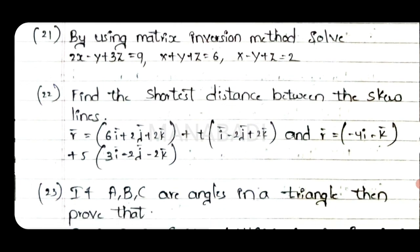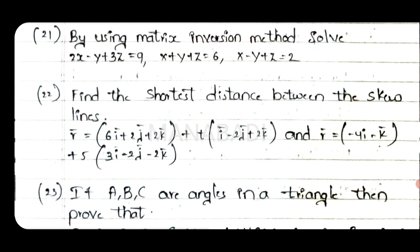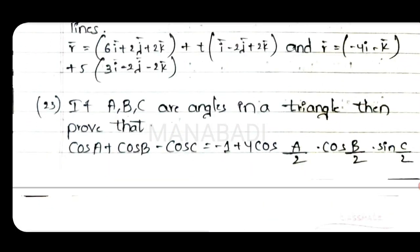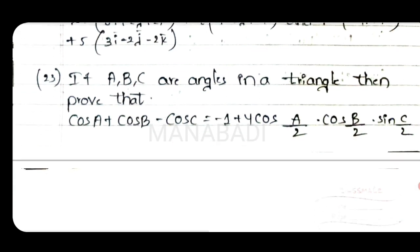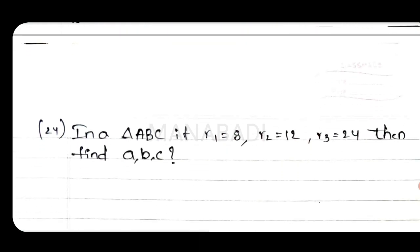Twenty-second question: Find the shortest distance between the skew lines. Twenty-third question: If A, B, C are the angles in a triangle, prove that cos A plus cos B minus cos C equals minus 1 plus 4 cos(A/2) cos(B/2) sin(C/2). Twenty-fourth question: In triangle ABC, if R1 equals 8, R2 equals 12, R3 equals 24, find the values of A, B, C.